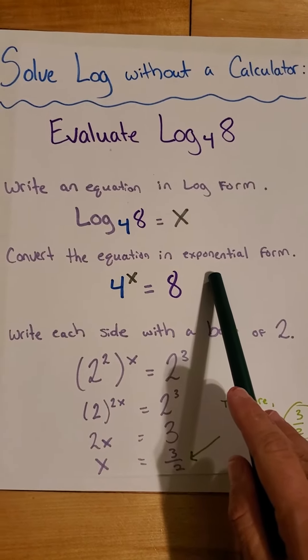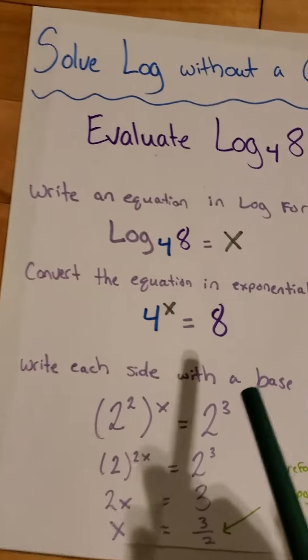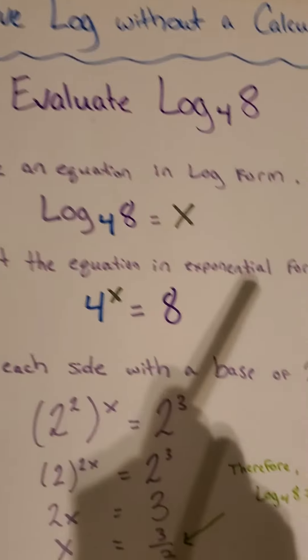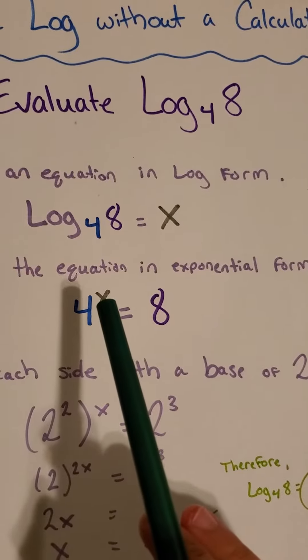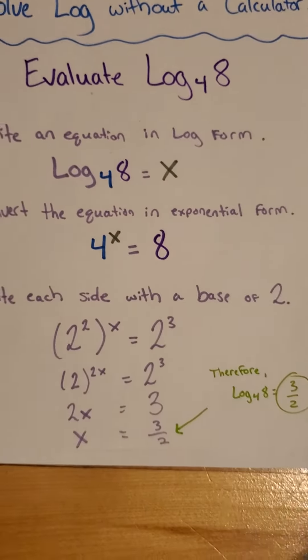That's why there's lots of mini lessons. Anyways. So, we're converting the equation into exponential form. 4 to the x equals 8. Okay.